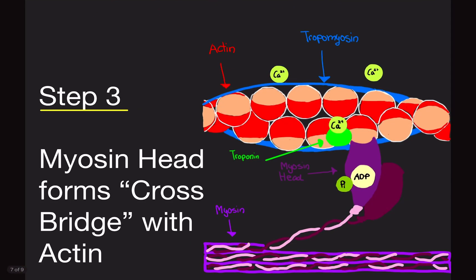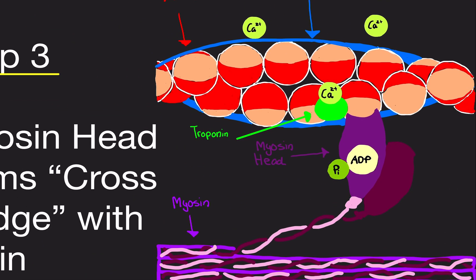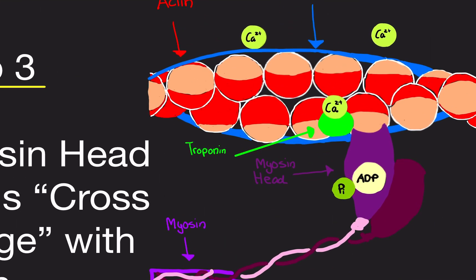Step three: the myosin heads form something called a crossbridge — that's the official name — with actin. Since the binding site is now exposed, the myosin head is attracted to the binding site. Basically what's happening is the binding site on actin is signaling the myosin to come over and bind. Since tropomyosin is out of the way, the myosin head can come along and bind to the binding site on actin. And the calcium is still on the troponin because you don't want tropomyosin to cover it up again.